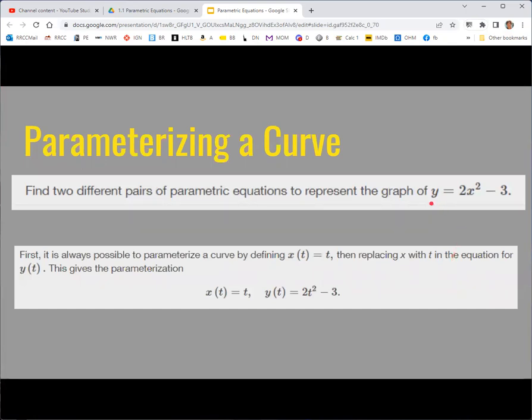If you have y as a function of x, it could be any function of x. One way to get a parameterization is just to say, well, x equals t, and that's one of your parametric functions. Then the y equation would be the exact same, but x is replaced with t because x is equal to t. If you have y as a function of x, this is an easy way to get a parameterization. But as we said at the very beginning, we're most interested in parameterized stuff where y isn't a function of x.